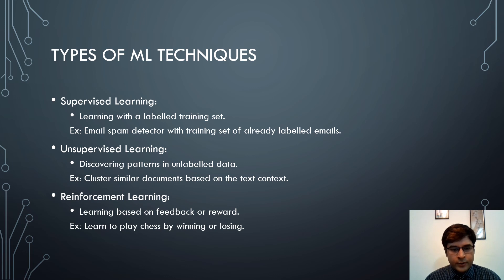Unsupervised learning comprises discovering patterns in unlabeled data. The program is given data but the corresponding output is not provided; the program itself must cluster similar data into different groups. For example, clustering similar documents based on text content is an example of unsupervised learning. Reinforcement learning implies learning based on feedback or reward — for example, learning to play chess by winning or losing.